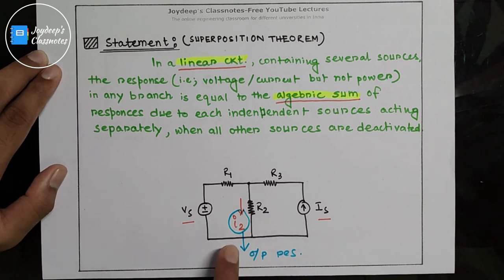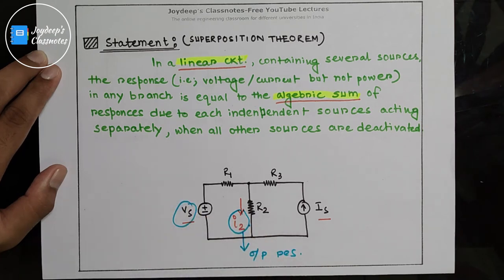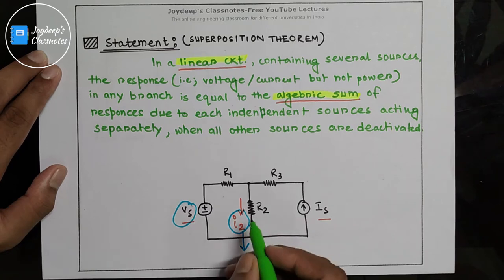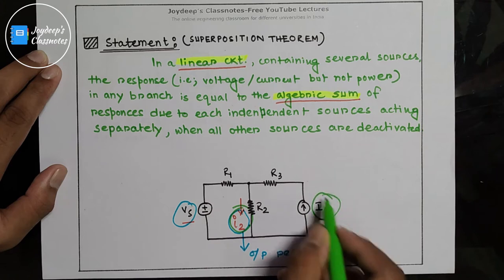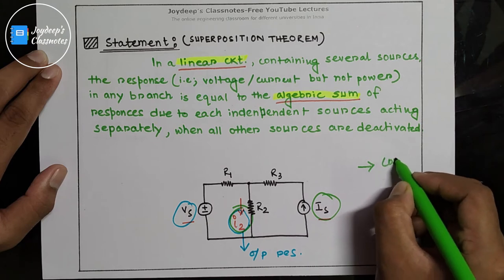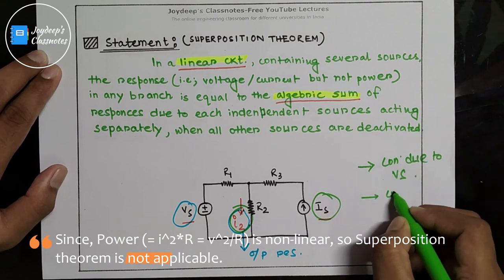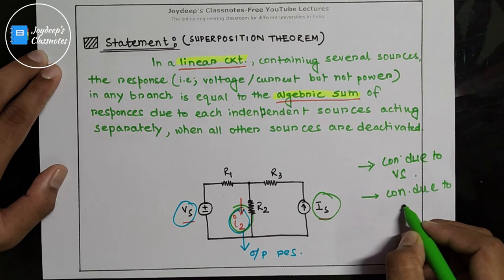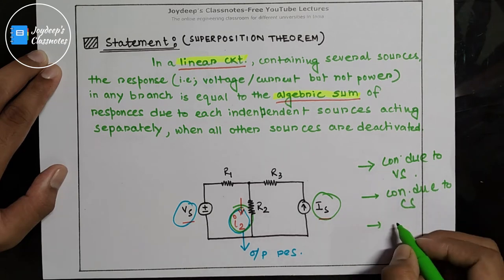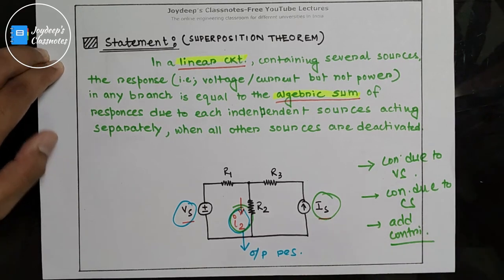If you want to find out I2 using superposition theorem, the theorem says: first, you have to find out the contribution of I2 due to the voltage source — that is your step one. On the second step, you find out the contribution of I2 due to the current source. And then, at step three, you just add those contributions, and that becomes your answer.